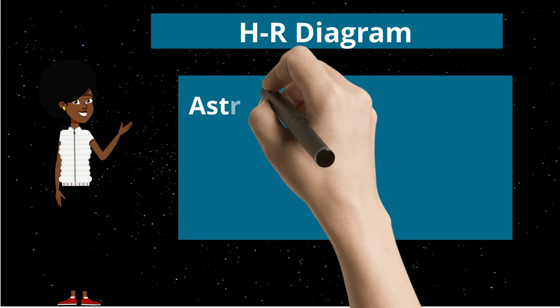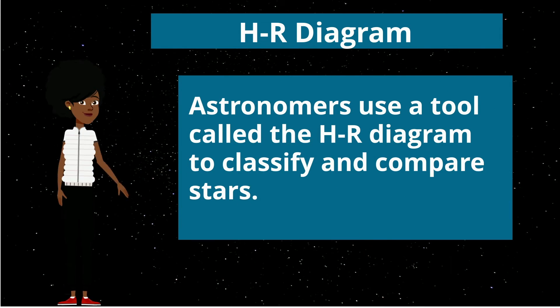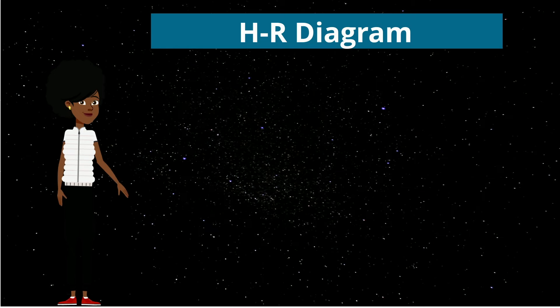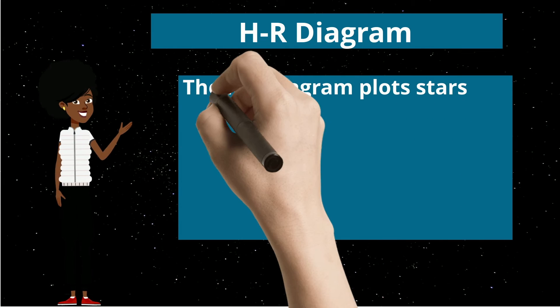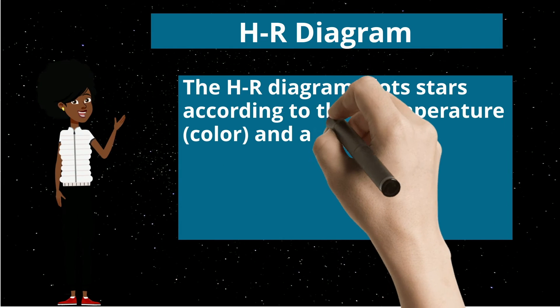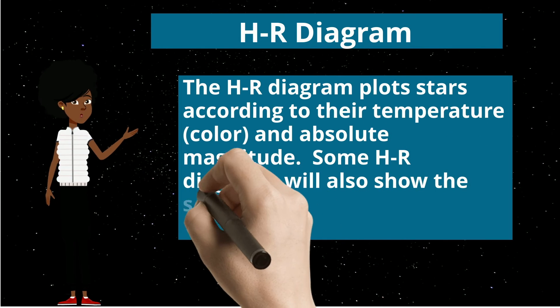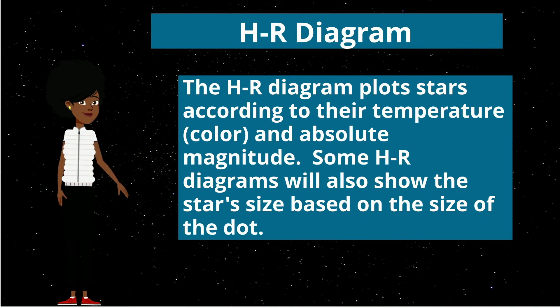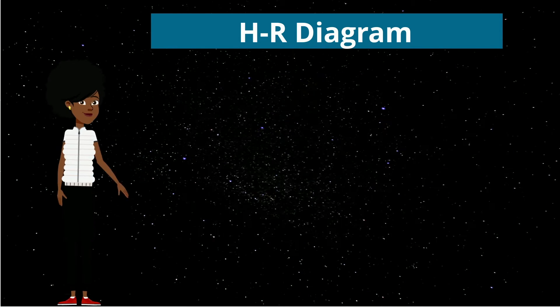The HR diagram. You see, astronomers use a tool called the HR diagram to classify and compare stars. The HR diagram plots stars according to their temperature, which is their color, and absolute magnitude. And some HR diagrams will also show the size of a star based on the size of the dot.